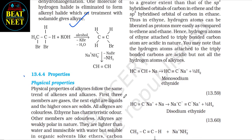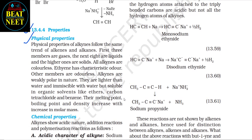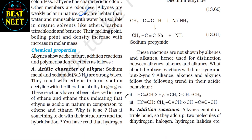13.4.4 Properties — Physical properties: physical properties of alkynes follow the same trends as alkenes and alkanes. The first three members are gases, the next eight are liquids, and the higher ones are solids. All alkynes are colorless; ethyne has a characteristic odor and other members are odorless. Alkynes are weakly polar, lighter than water, insoluble in water but soluble in organic solvents like ether, carbon tetrachloride, and benzene. Their melting point, boiling point, and density increase with increase in molar mass.